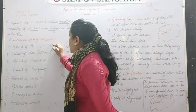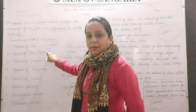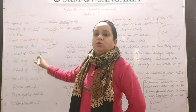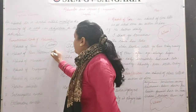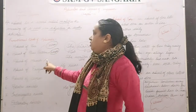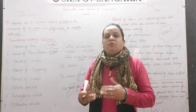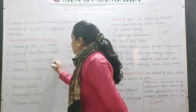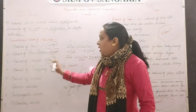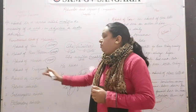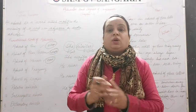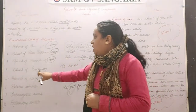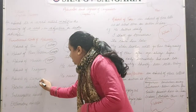Adverb of time answers 'when,' adverb of place answers 'where,' and adverb of manner answers 'how.' The fourth kind is adverb of frequency. Frequency means how often the action is happening. And the fifth kind is adverb of degree. So up to these five, these are the functional kinds of adverbs: when, where, how, how often, and how much.